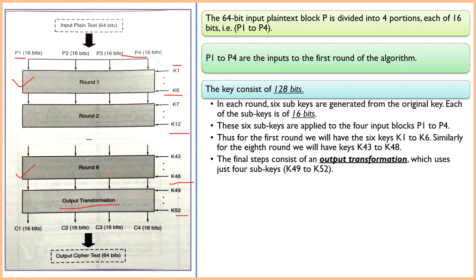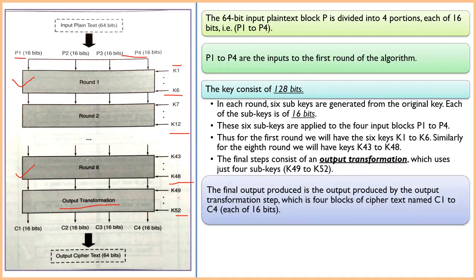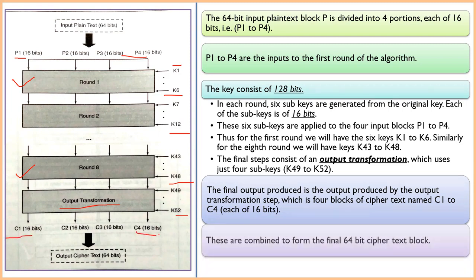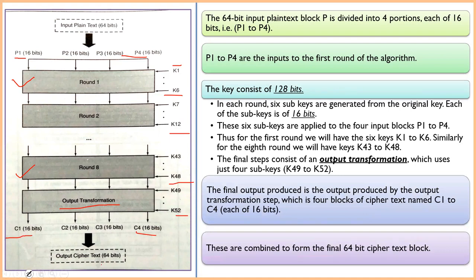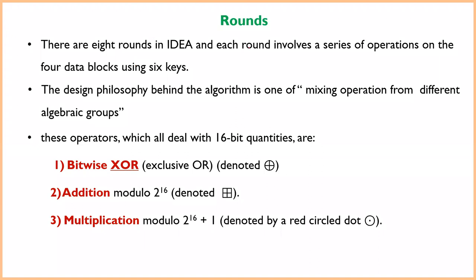The final output is produced in the output transformation step. Four blocks of ciphertext — C1 through C4 — are combined to produce the 64-bit ciphertext output. That is the final cipher. This is the overall process of IDEA: eight rounds where each round involves a series of operations on the four data blocks using six keys.